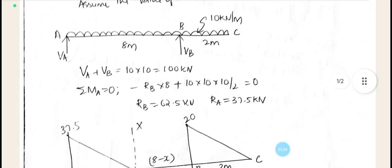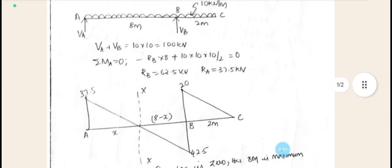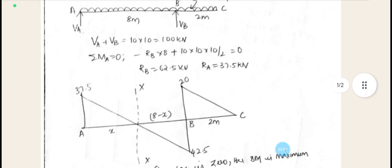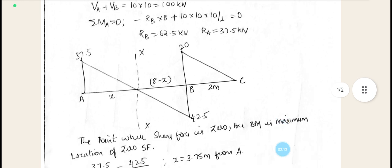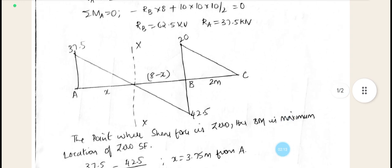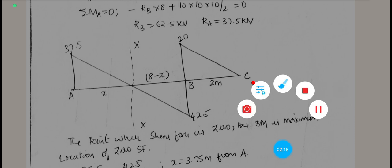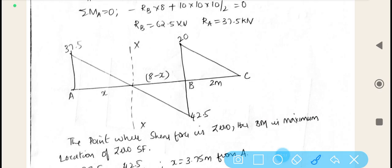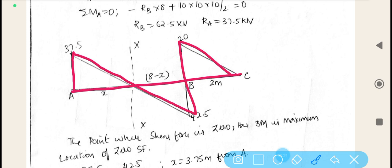After finding out the reactions, draw the shear force diagram. This is how the shear force diagram, and shear force for a UDL, that is uniformly distributed load, it comes out like this. This is the reaction 37.5.